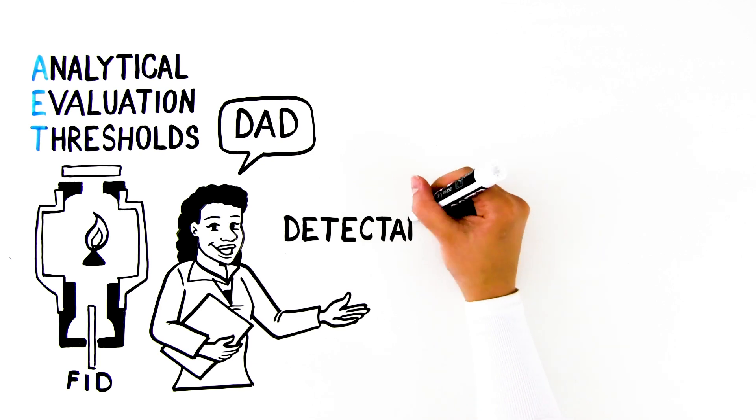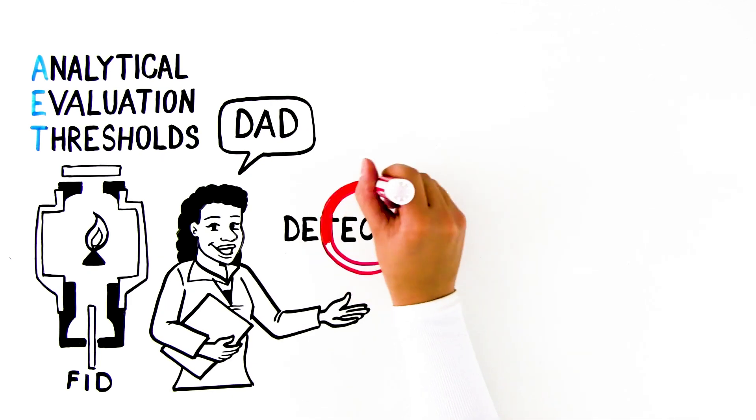However, not all E&L compounds have UV chromophore and therefore are not detectable with these detectors.